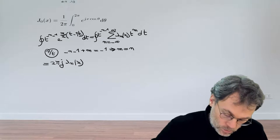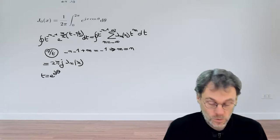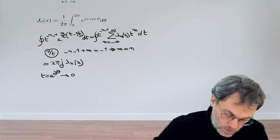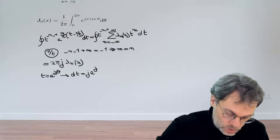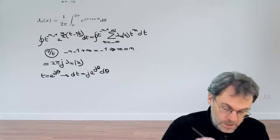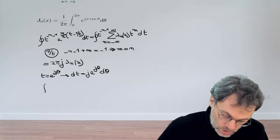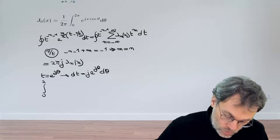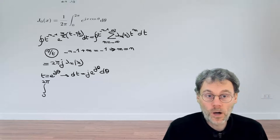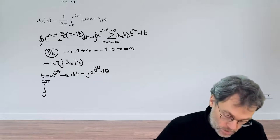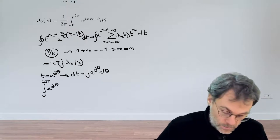So if we're going to say that t is exponential jθ with θ running from 0 to 2π, that also means that dt is j exponential jθ dθ. So let's have a look at our integral, which then becomes a regular integral from 0 to 2π of t to the power minus n minus 1. So that becomes exponential jθ to the power minus n minus 1.